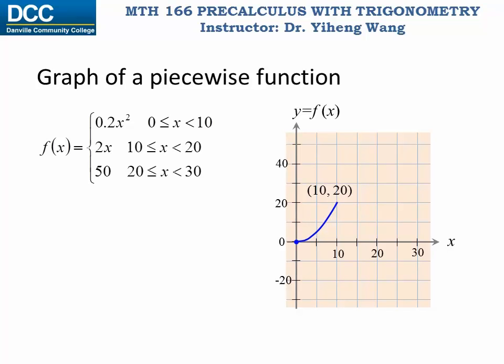So we continue with graphing the second equation from x equals 10 to x equals 20. x equals 20 is not included. And then we graph this third equation, which is a constant 50, starts from x equals 20 and ends at x equals 30, but x equals 30 is not included. And this completes the graph for this piecewise function.